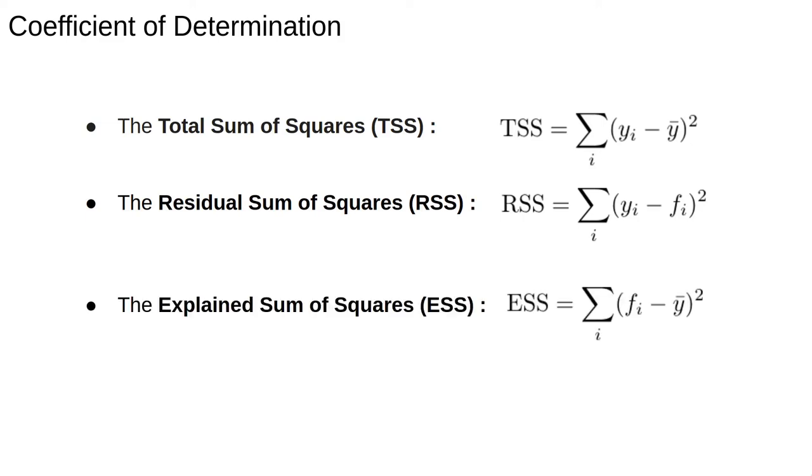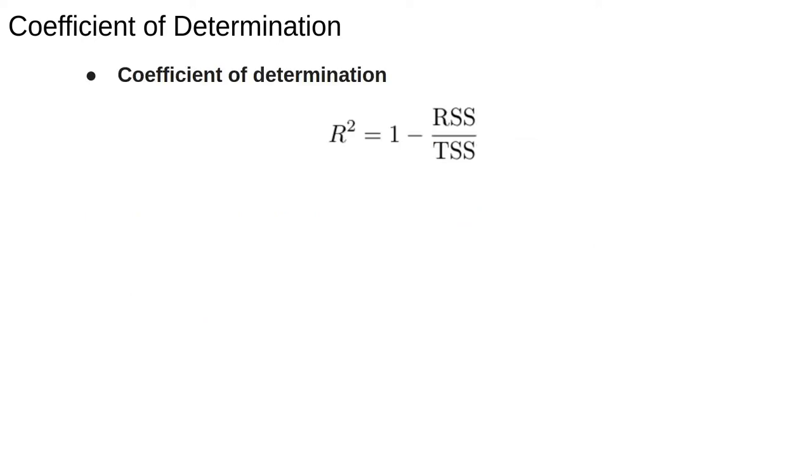Finally, we have the explained sum of squares. This is a measure of how much variation there is in the model values. Finally, we can define the coefficient of determination as 1 minus the ratio of the residual sum of squares to the total sum of squares.